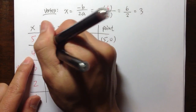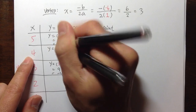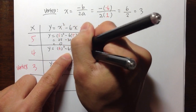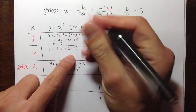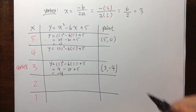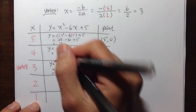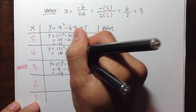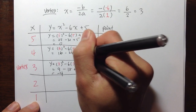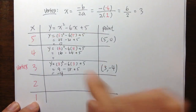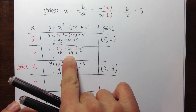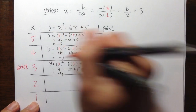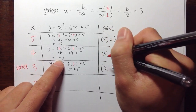For x equals 4: y is equal to 4 squared minus 6 times 4 plus 5. 4 squared is 16. 16 minus 6 times 4, which is 24, plus 5. 16 minus 24 is negative 8, and negative 8 plus 5 is negative 3. So the point is (4, negative 3).